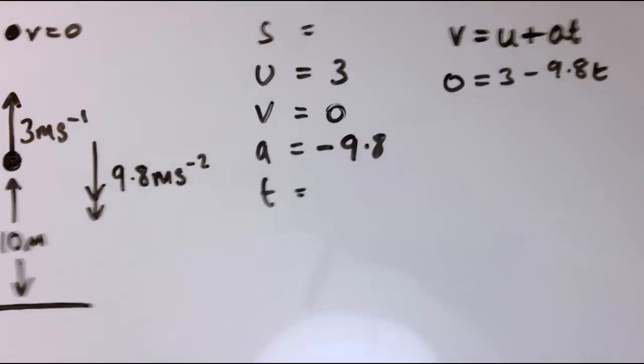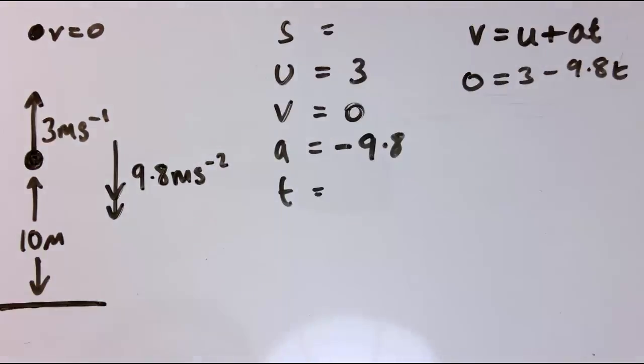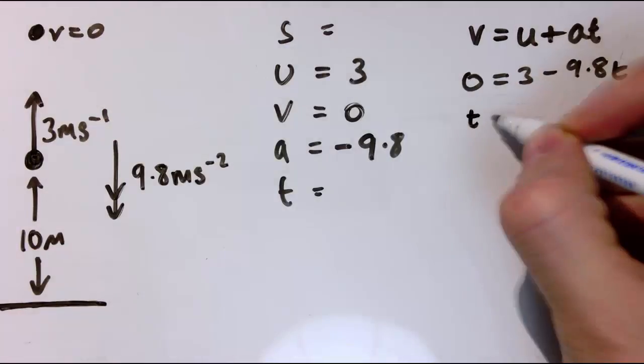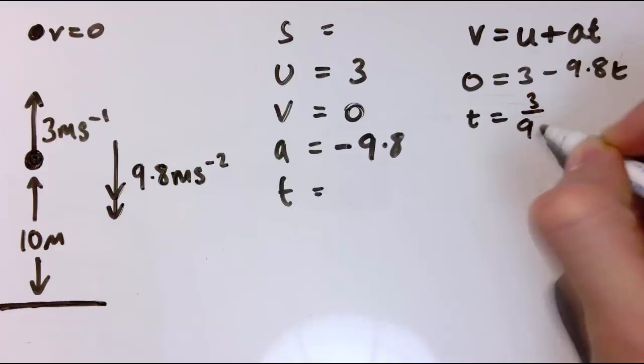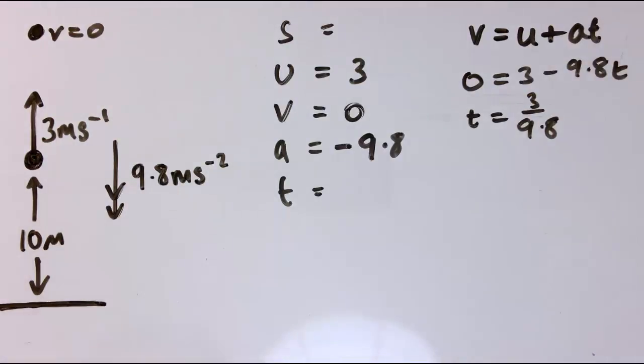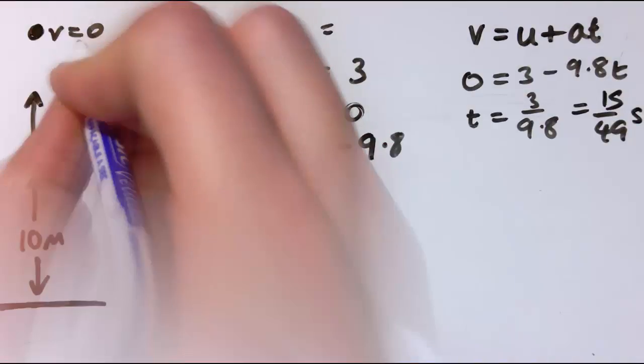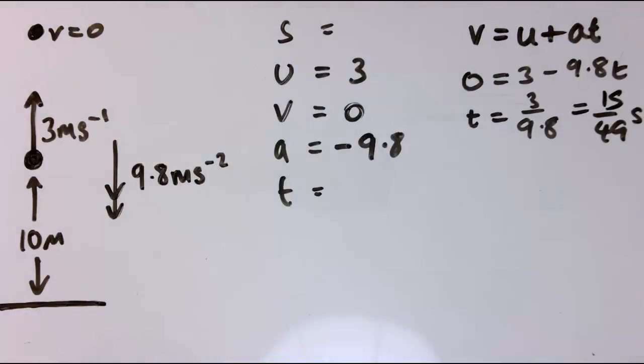So that's what we've got here. So I just get T equals three divided by 9.8 then, and that's 15 over 49, you could round it off if you wanted to for a final answer, but let me just leave it as that, that many seconds. That's when it'll be at the top here.